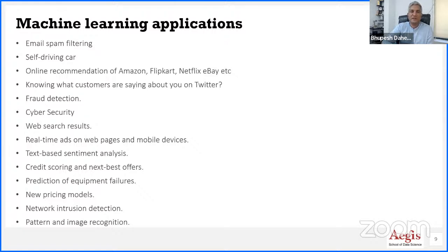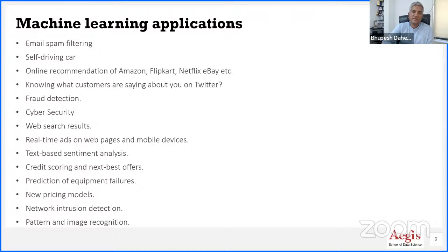Self-driving cars are another unimaginable phenomenon. Online recommender systems I already spoke about. Sentiment analysis — if you want to know what customers are talking about Airtel's 5G services, just use the Twitter API and you'll analyze data of millions of customers within minutes. Fraud detection — while millions of people are doing credit card transactions, how does the system know it's you and not someone else? Imagine you are sitting here and someone is trying to do a credit card transaction sitting in Barcelona — the system detects this in fractions of seconds.